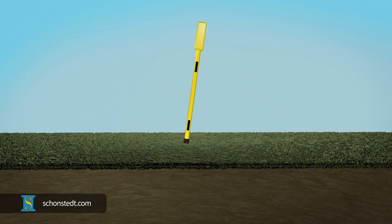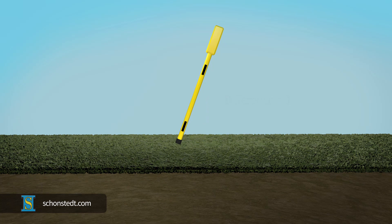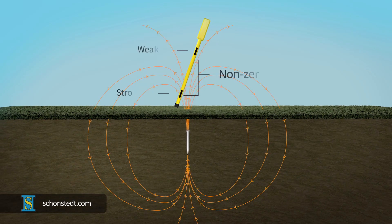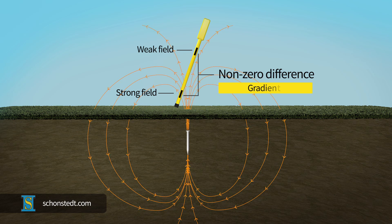Schoenstatt magnetic locators operate on the principle of detecting the difference in the magnetic field present at two sensors spaced a fixed distance apart. In the absence of a buried object, the field at both sensors is the same. The presence of an object made of iron or steel results in a difference between the magnetic field at the top and the bottom sensors. That difference is called a gradient.